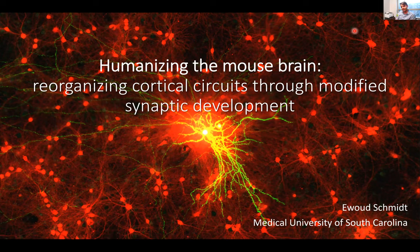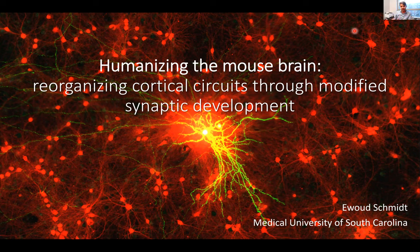What I'll be talking about today is the work I've done studying human-specific genes and trying to understand how they regulate brain development and function. I'm also trying to understand what we can learn from studying human-specific genes and what happens when we tweak certain parameters about brain development like synaptic development or neuronal connectivity, and the impact this has on mammalian brain development and function.